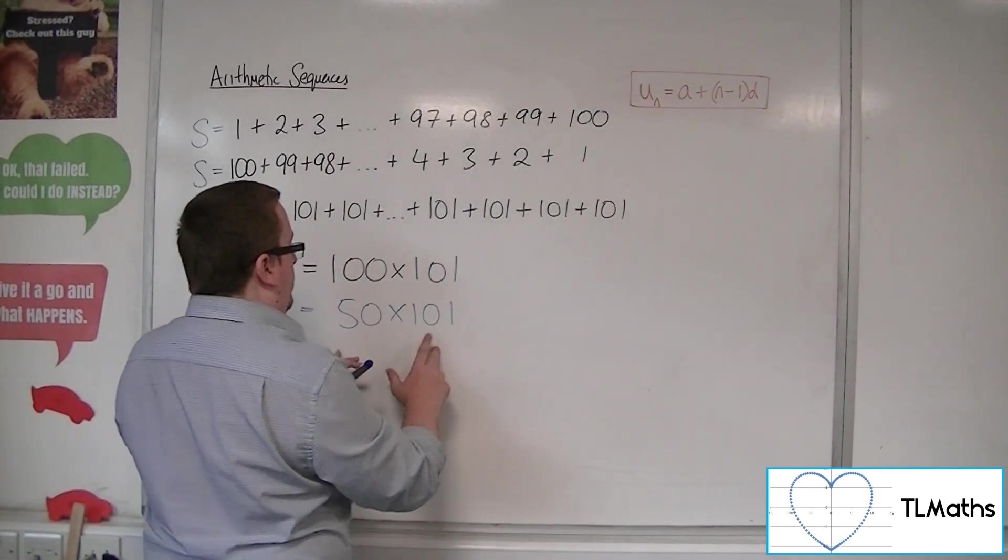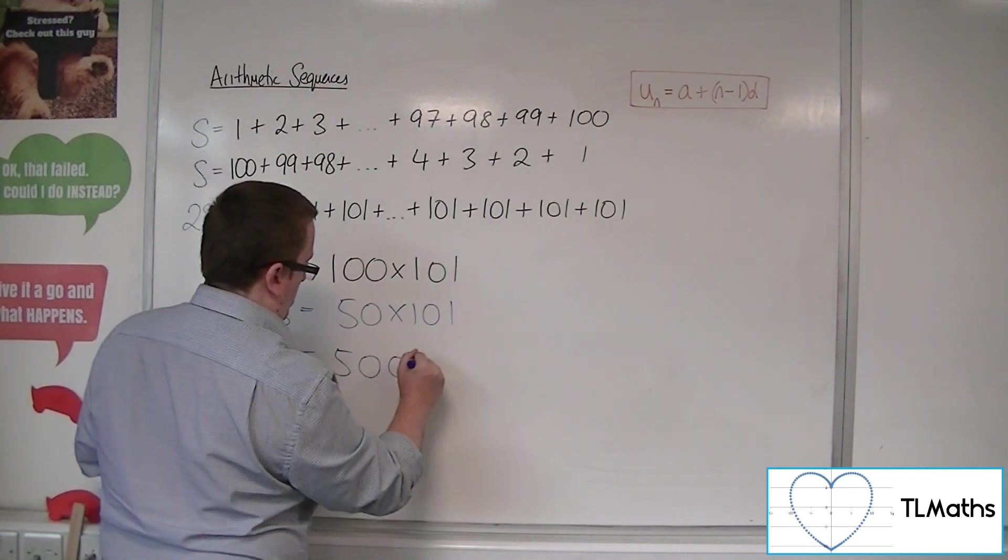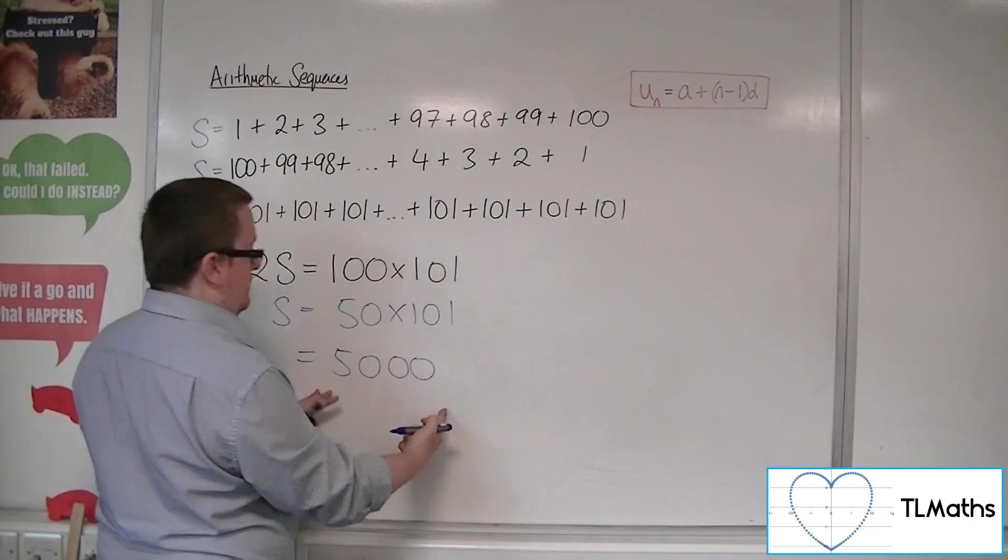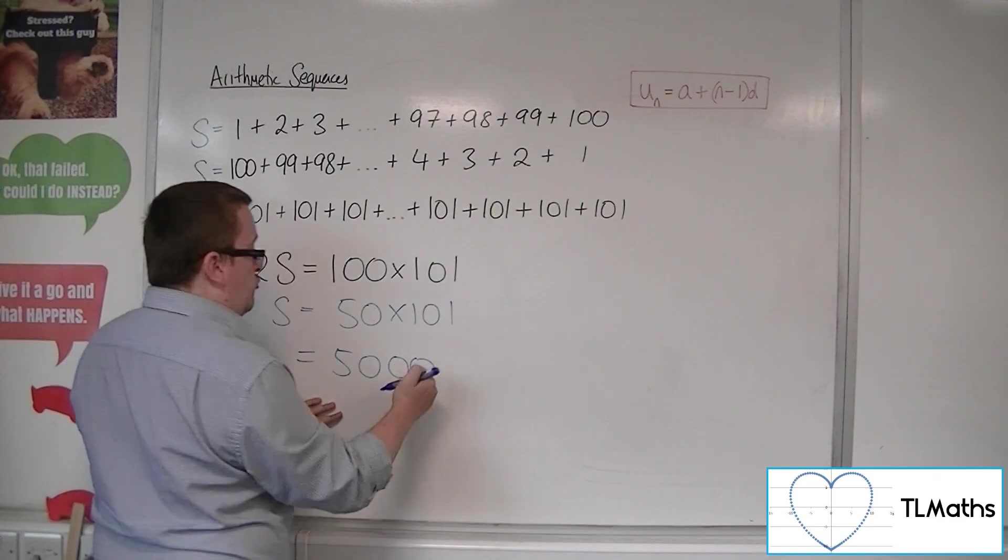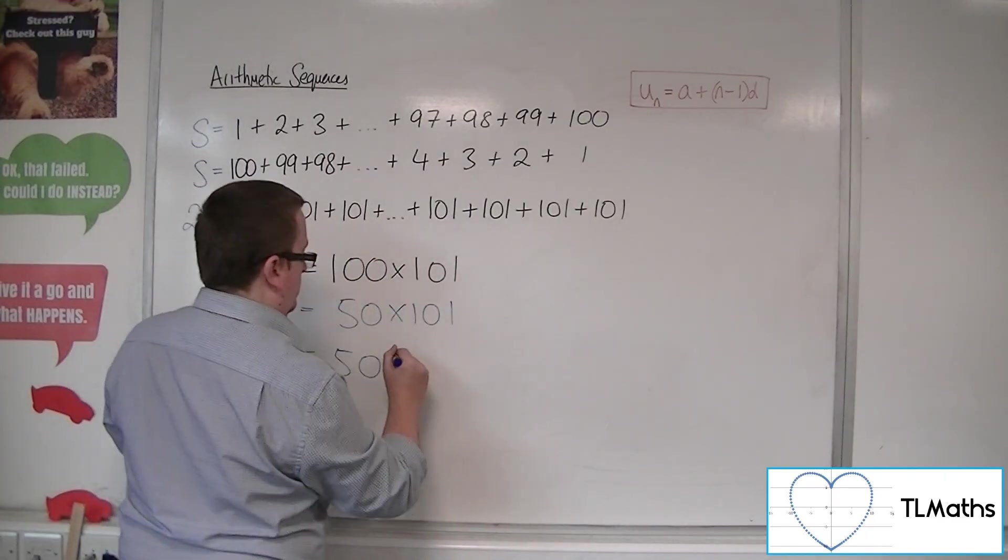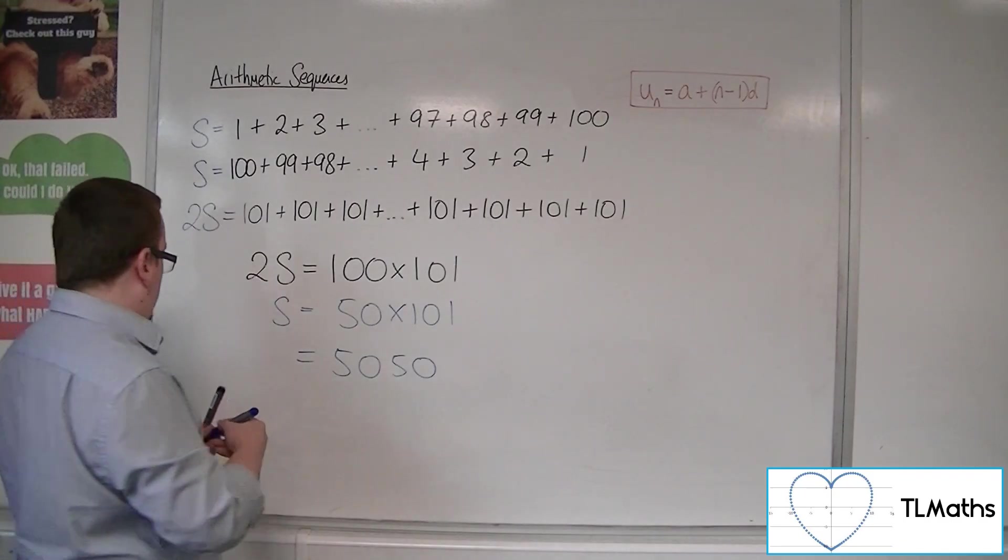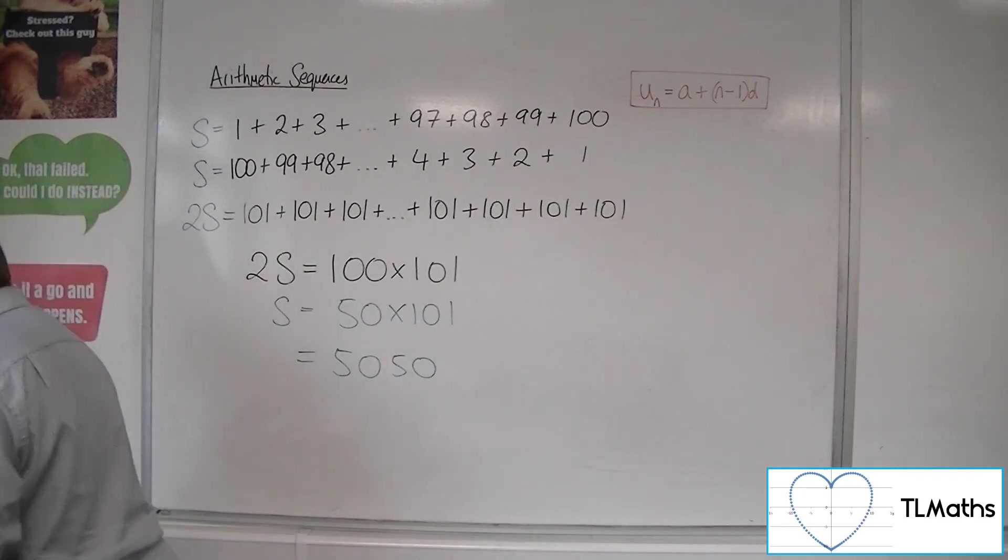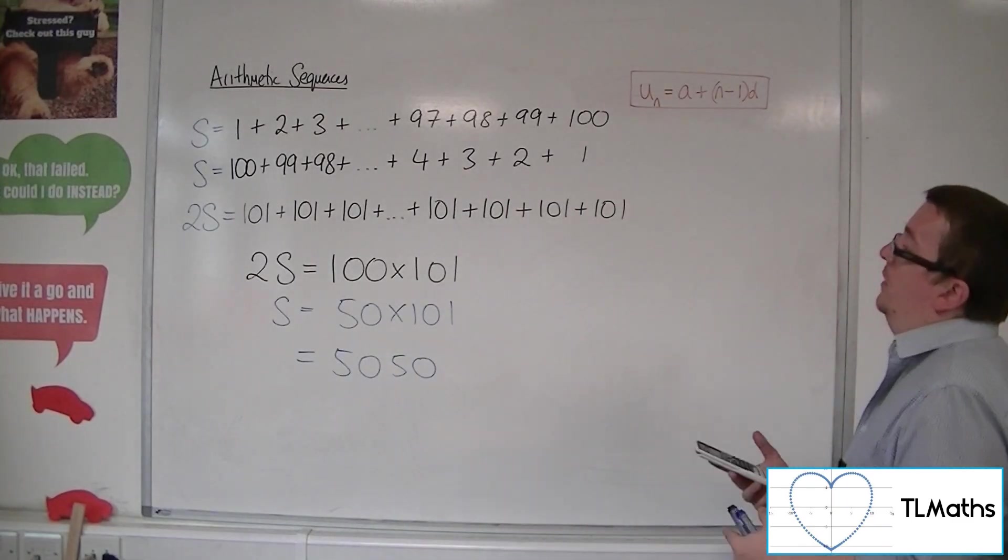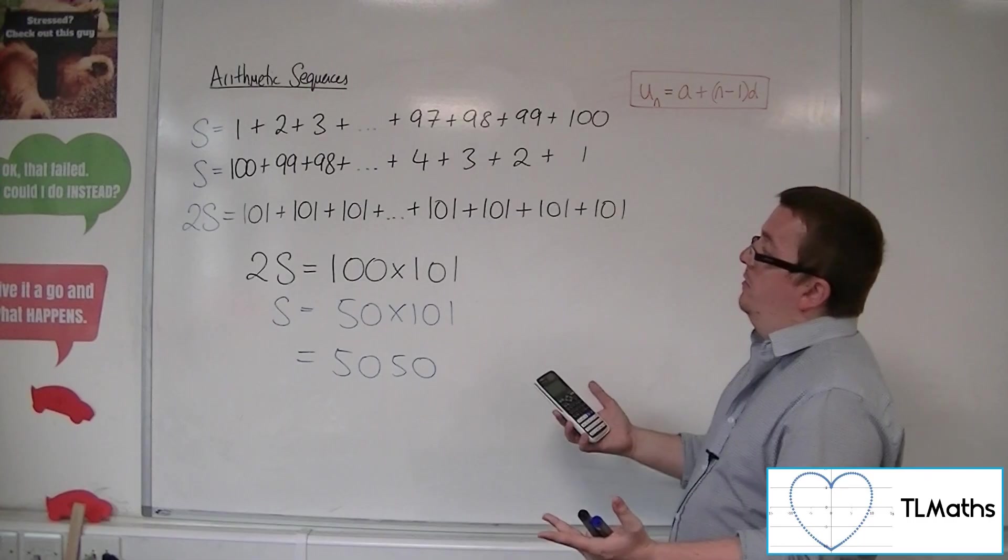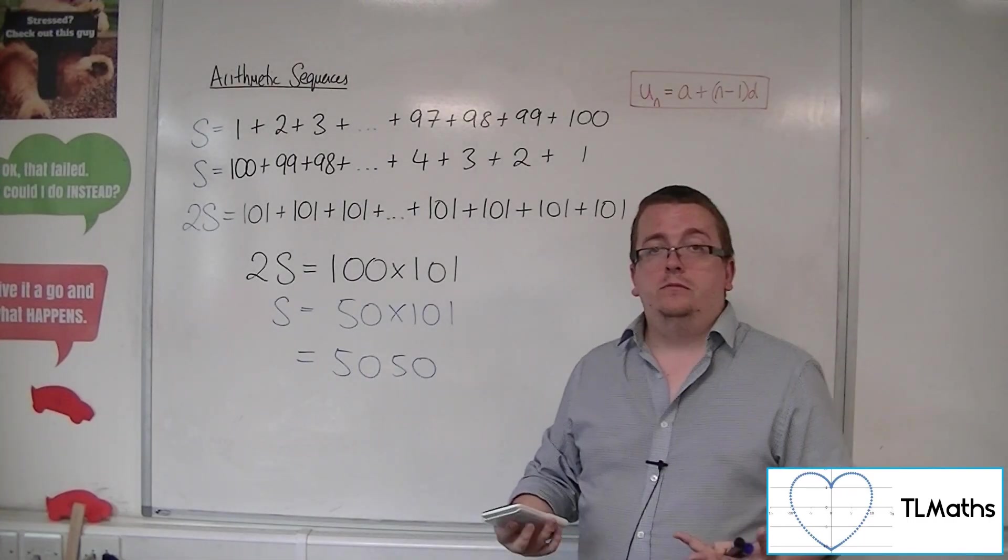So 50 times 100 is 5,000, and then adding on the extra 1, we've got 5,050. So in doing this, he was able to make a very complicated-looking problem a lot simpler.